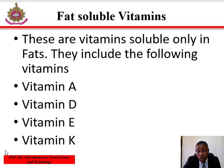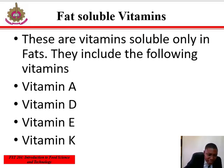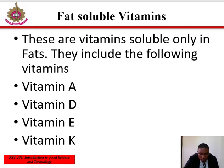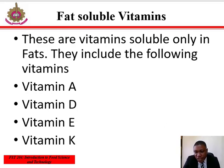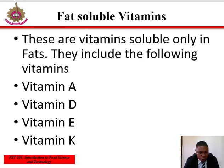Vitamin E, chemically known as alpha-tocopherol, is the most active of the group of the tocopherols. It is present in seed oils, especially wheat germ oil, margarine, seeds, and green leafy vegetables.